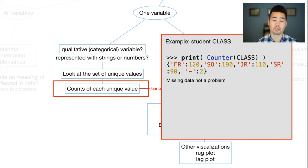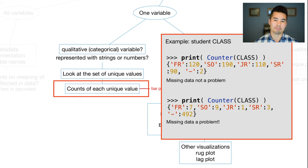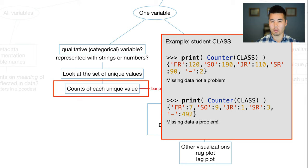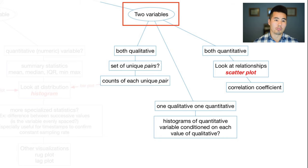Looking at the counts of each value tells you a lot about the data set. Hopefully there won't be too many missing values and distributions will be relatively even — for example, across the number of students in each year in college. But if you see a distribution where most of your data shows incorrect or missing values, that might suggest a data collection problem. Going through the rest of the cleaning steps won't make sense until you go back to your data source and figure out why the data wasn't being collected correctly.